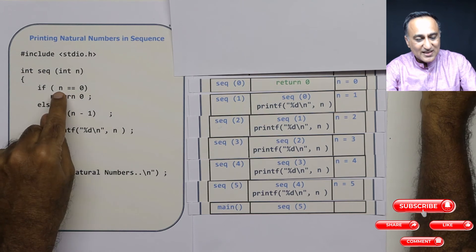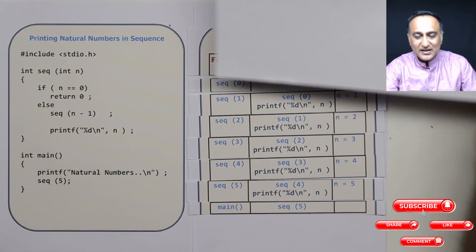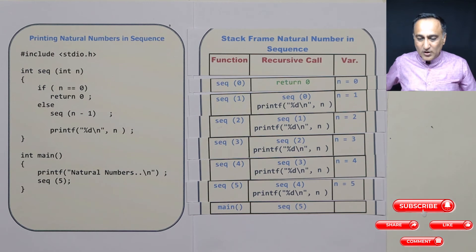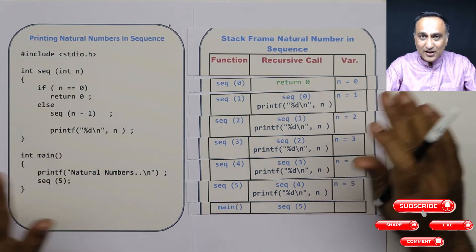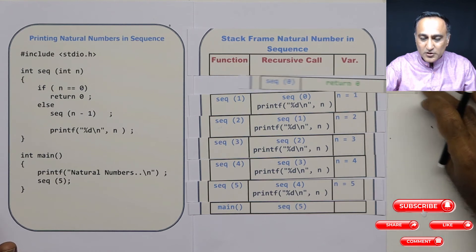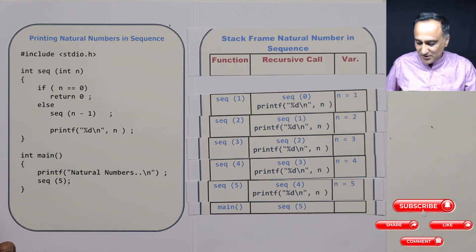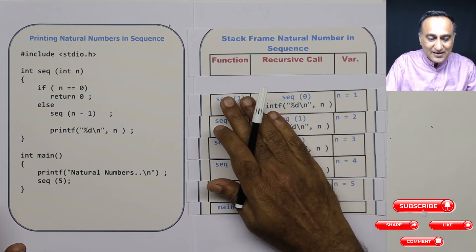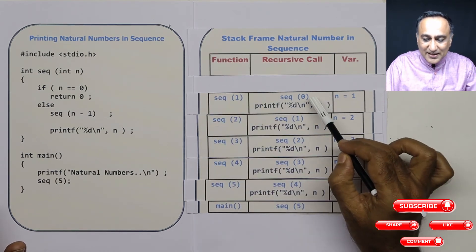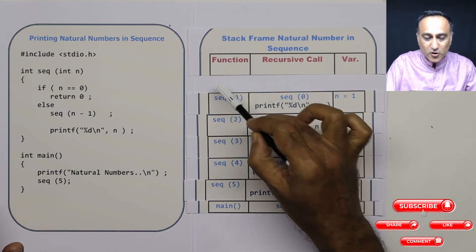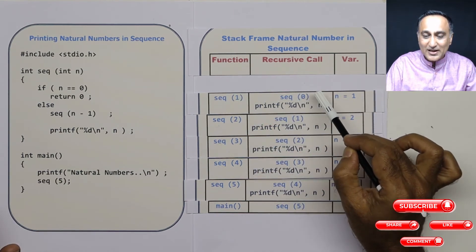Since n is 0, I'm returning 0. I'm doing a return and the calculation is complete. This frame is going to get popped out from the stack. Since it gets popped out, that means sequence(0) got executed and that frame was deleted.